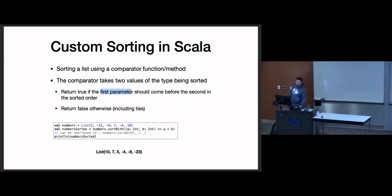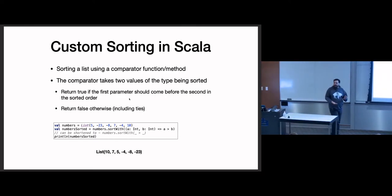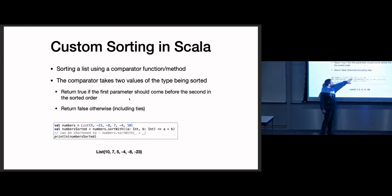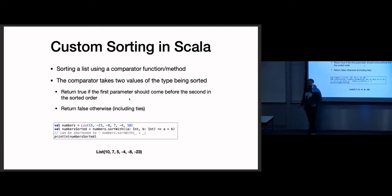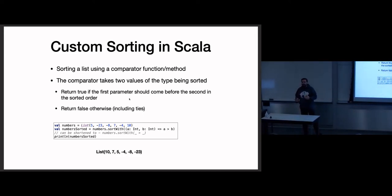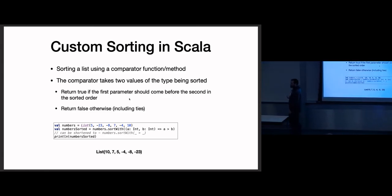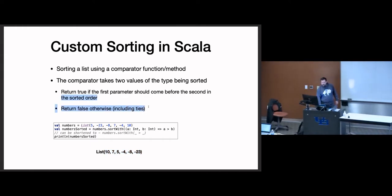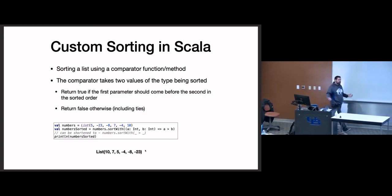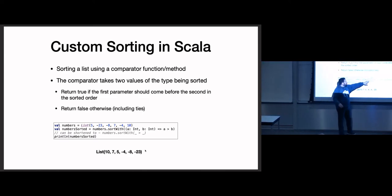That boolean is true if the first parameter should come before the second parameter in the final sorted order, and false otherwise. The less-than operator gives us this functionality: if we say 5 < -23, that's false, meaning the first parameter does not come before the second in sorted order. Reversing it: -23 < 5 is true, so -23 comes before 5 in sorted order. If I want to override that ordering I give it the greater-than function instead, and with that change of comparator I get a different sort order. We give sortWith a comparator that returns true if the first input should come before the second.